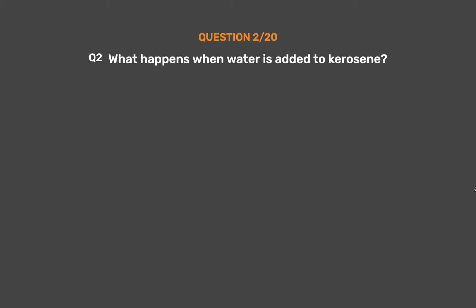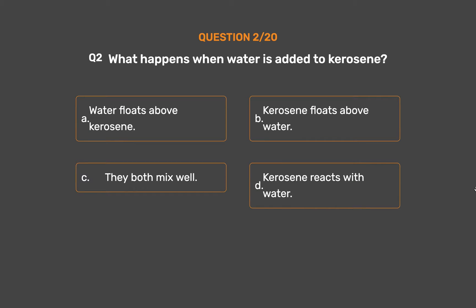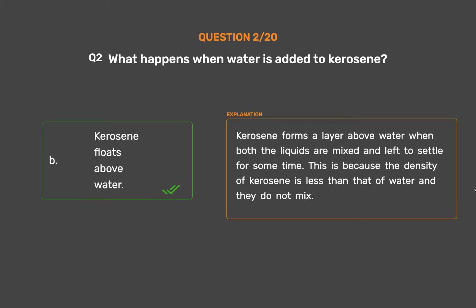Question number 2. What happens when water is added to kerosene? Option A: Water floats above kerosene. Option B: Kerosene floats above water. Option C: They both mix well. Option D: Kerosene reacts with water. The correct answer is Option B. Kerosene floats above water. Kerosene forms a layer above water when both liquids are mixed and left to settle for some time. This is because the density of kerosene is less than that of water and they do not mix.